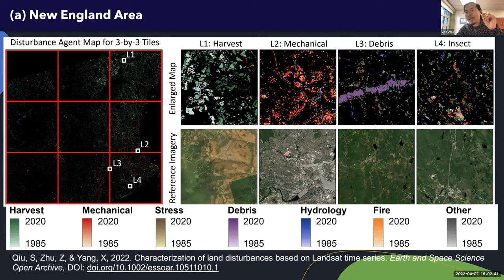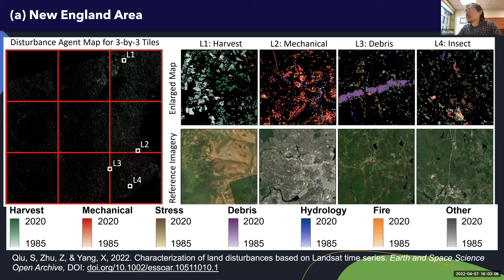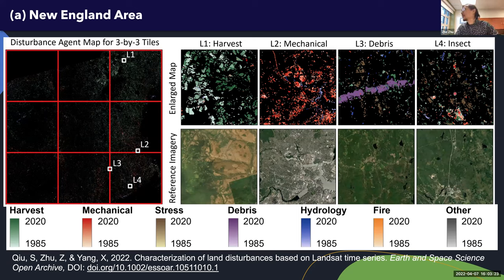One area is correctly classified as debris, as it was caused by a tornado. For the Rhode Island location in L4, there's gypsy moth infestation. I want to note that there are actually omission errors in this map because in this application we're using a single path and row, not the overlap area. If we used the overlap area, more would be detected.